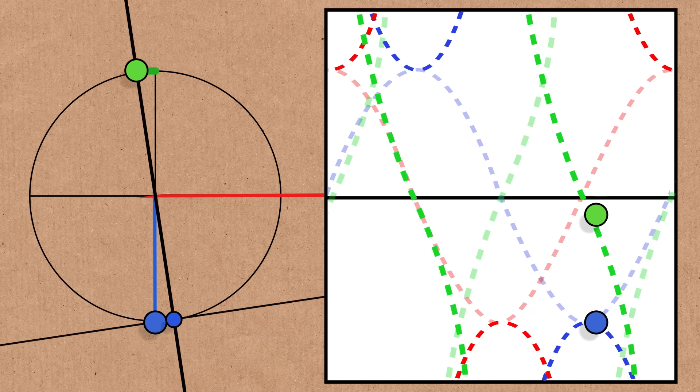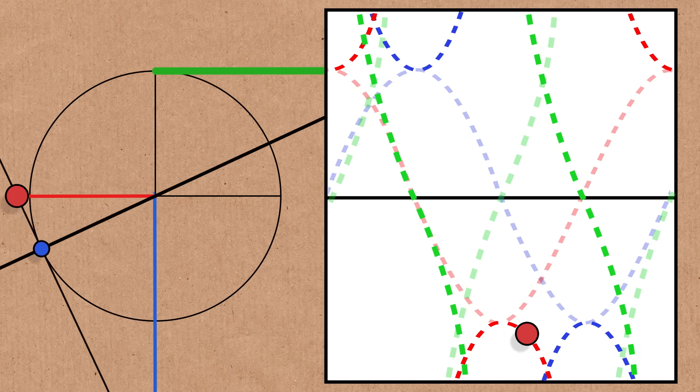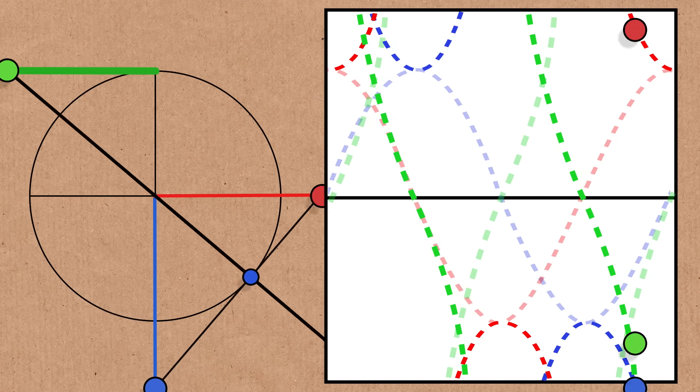And I kind of wish we called trigonometry the circular functions from the word go, even if the use we most make of them is for finding missing sides in a right-angled triangle.